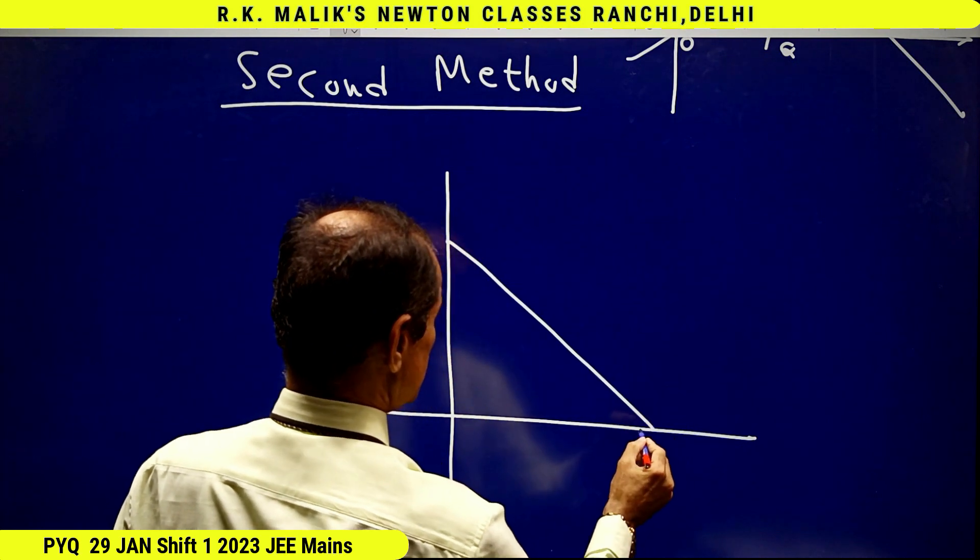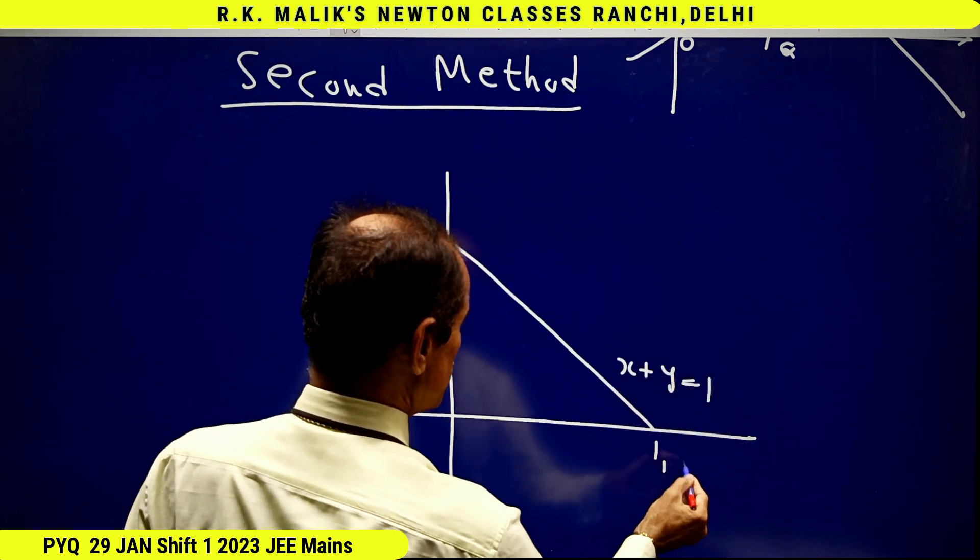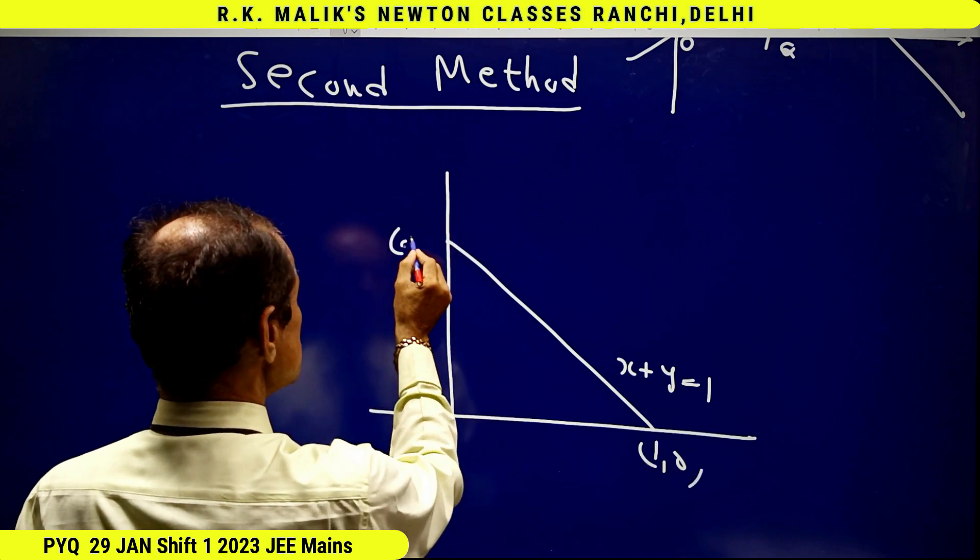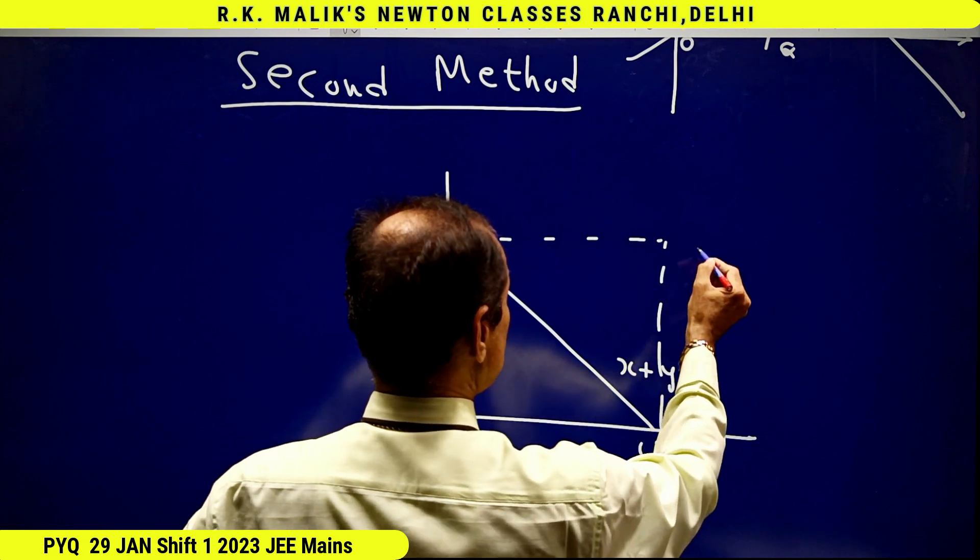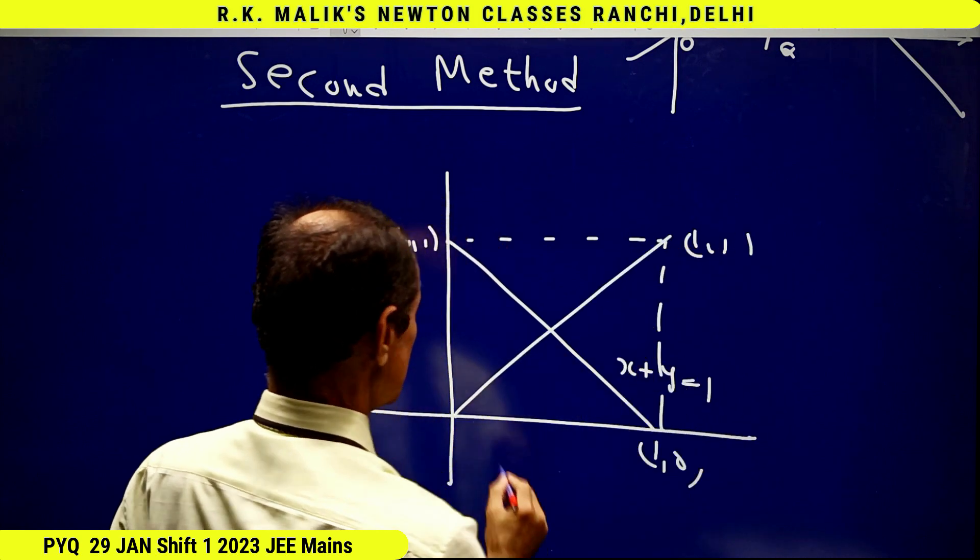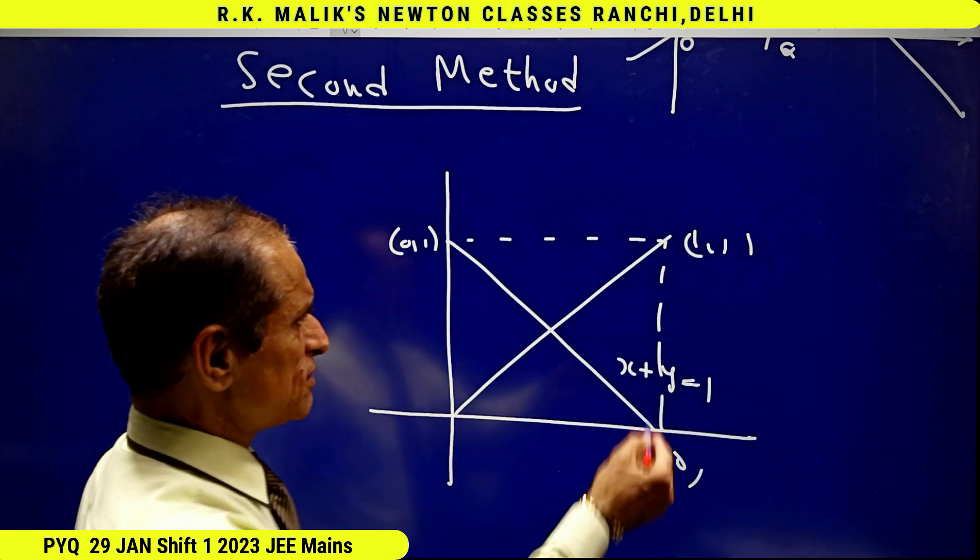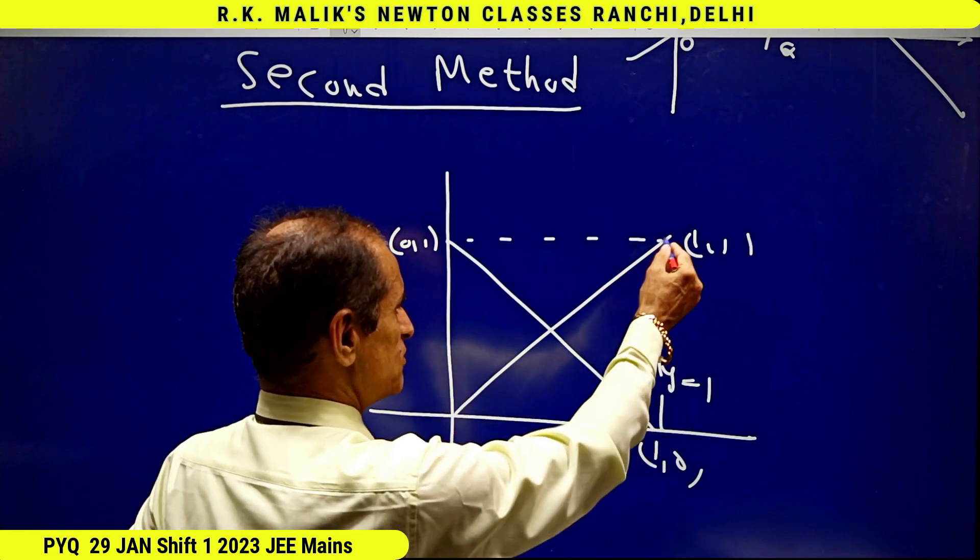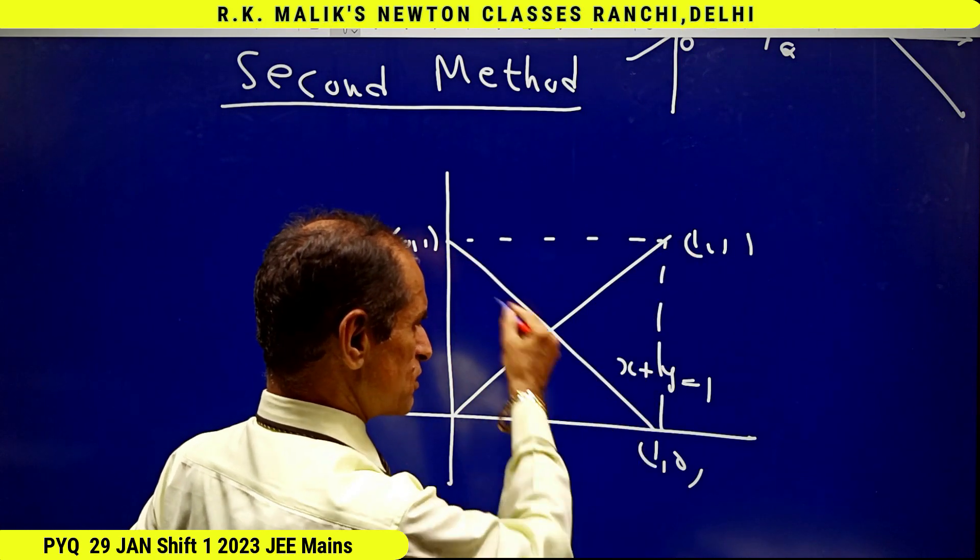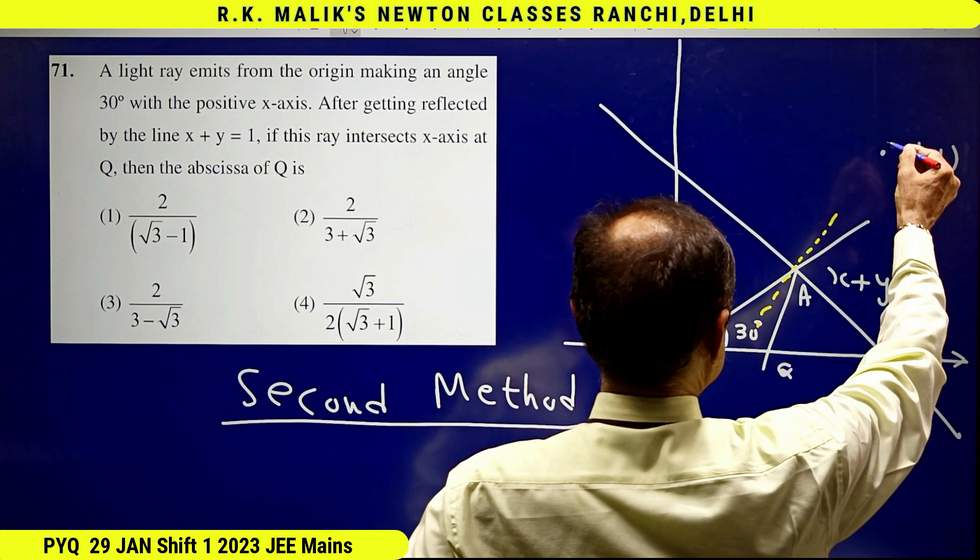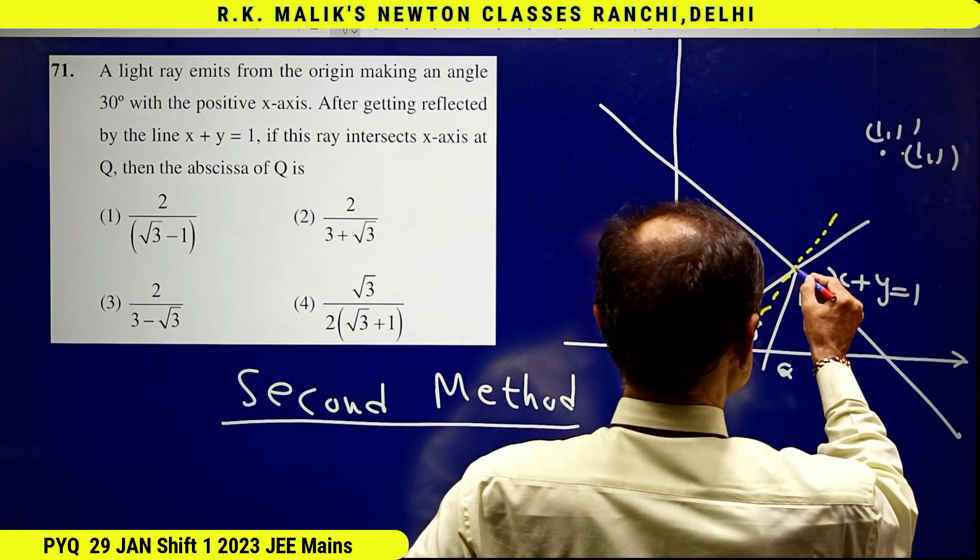See, this is x + y = 1. It is (1,0), it is (0,1). This point will be (1,1). This is clearly a square. Hence, yes, these two are mirror images of each other with respect to this line. Therefore, one point on the line is (1,1), known to you.